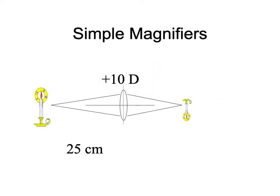Let's see what simple magnifiers actually do. With a candle 25 centimeters from a plus-10 lens, the rays hit the lens with vergence minus 4, exit at plus 6, and converge a sixth of a meter to the right. Since a sixth of a meter is less than a quarter meter, the image is actually minified — not magnified, and certainly not 2.5 times greater.